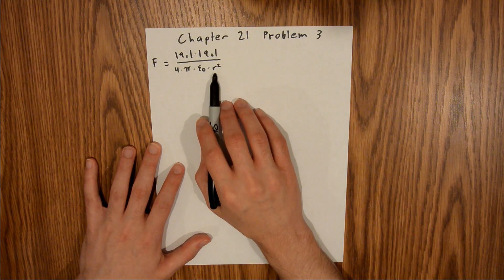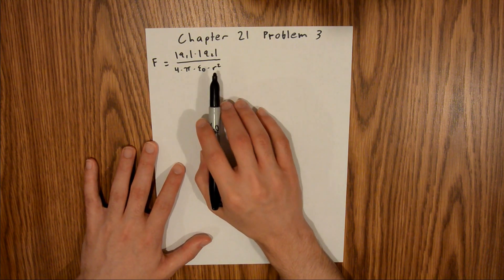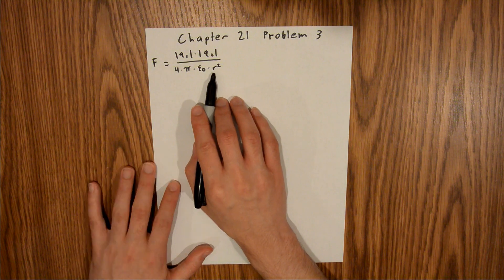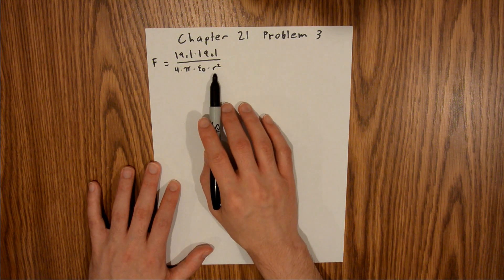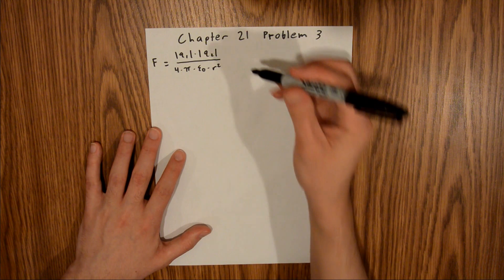In the problem, since we are looking for that r, we can divide both sides by f and multiply both sides by r squared.